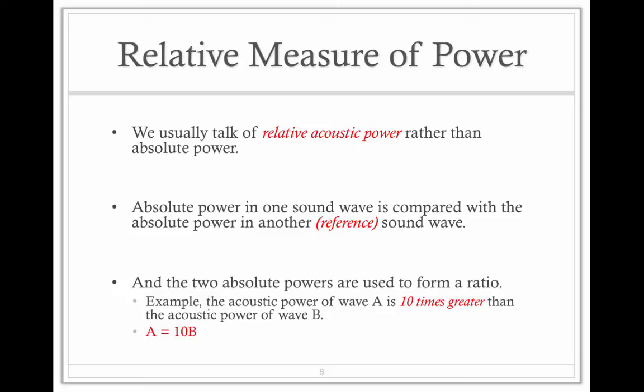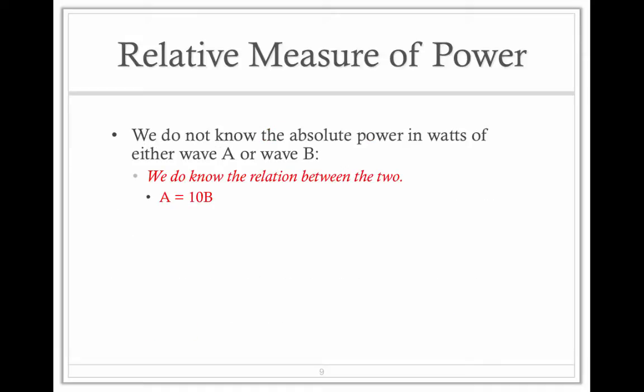You can use the two absolutes in the form of a ratio. For example, the acoustic power of wave A is 10 times greater than the acoustic power of wave B. We don't know the absolute power in watts of either A or B, but we know a relationship. So this is a relative measure.